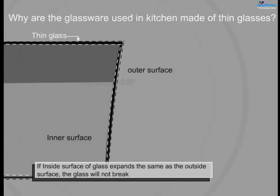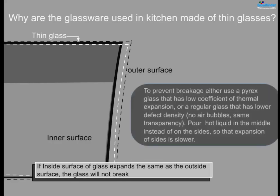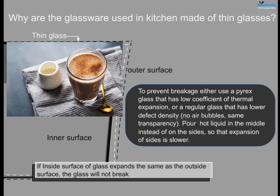If the outside and inside surfaces of the glass expand equally, the glass will not break. To prevent breakage, either use pyrex glass, which has a low coefficient of thermal expansion, or use regular glass with lower defect density — no air bubbles, same transparency. Also, pour hot liquid into the middle of the glass instead of onto the sides, so that expansion of the sides is slower.